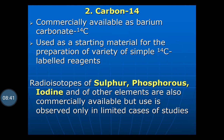The radioisotopes of sulfur, phosphorus, iodine, and other elements are also commercially available, but their use is observed only in limited cases where carbon is not feasible — then sulfur, phosphorus, or iodine is used. Carbon is used widely.